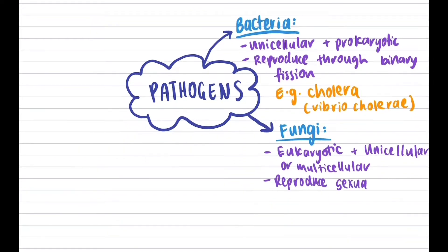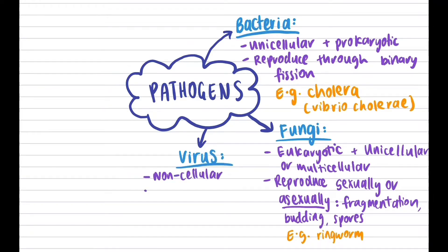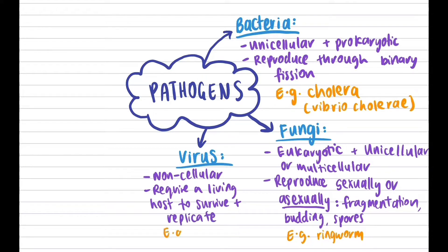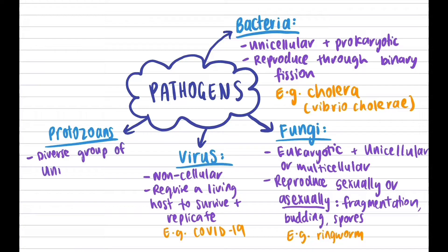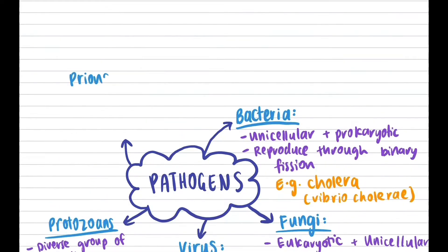Fungi reproduce through methods including fragmentation, budding, and spores — for example ringworm, which attacks the skin or scalp. Viruses are non-cellular organisms which are highly infectious and dangerous, as they require living host cells to replicate, for example COVID-19. Protozoans make up a diverse group of unicellular eukaryotic organisms, for example malaria, which is caused by Plasmodium falciparum. Prions are non-cellular misfolded proteins which are highly infectious due to being mutated.